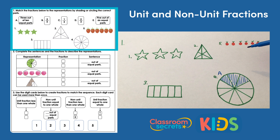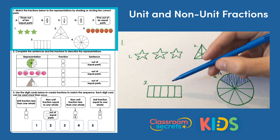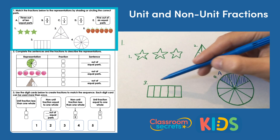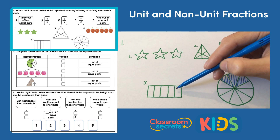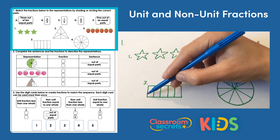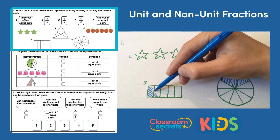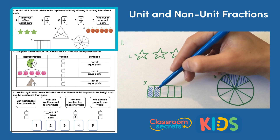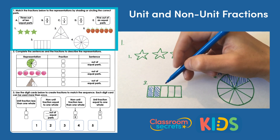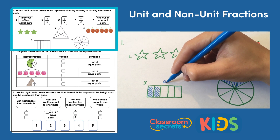Let's look at B: two fifths. We need to find something with five parts that make the whole, and that's number three — the bar with one, two, three, four, five parts. So we need to shade in two of those parts to make it two fifths. So three matches to B.